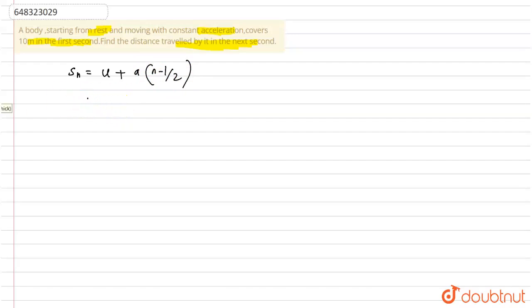We are starting from rest, so u = 0. S_1 = 10 for the first second, so after putting these values: 10 = 0 + a(1 - 1/2). So our a must be 20 meters per second squared.